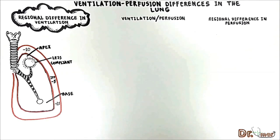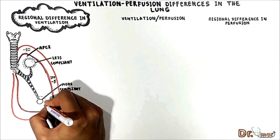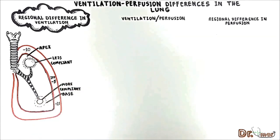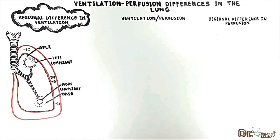The alveolus at the base of the lung has a smaller size and is therefore more compliant — it is easy to further stretch and open it. The greater compliance at the base means that during inspiration it increases in size more, allowing more air to flow into the basal alveoli. They are smaller than the apical alveoli throughout the entire respiratory cycle but have a greater change in size, so overall alveolar ventilation is greater at the base than at the apex.